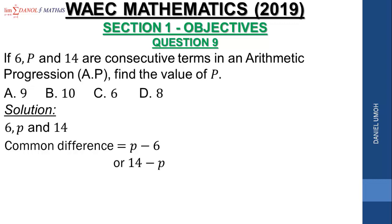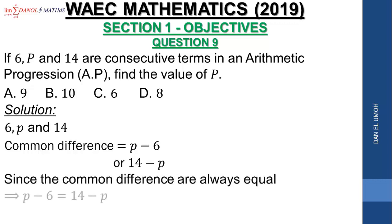Since we know that the common differences are always equal, it means that P minus 6 must be equal to 14 minus P. So when we solve this by collecting like terms...